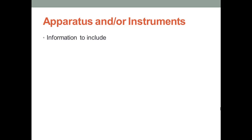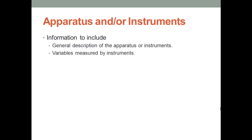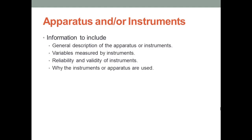In the apparatus or instruments section of the Method section, you describe any apparatus or instruments you propose to use in your research study. The following information should be included: first, a general description of the apparatus or instrument; second, the variables measured by the instruments; third, the reliability and validity, when available, of the instruments; fourth, a justification for why you chose these instruments; and fifth, a reference indicating where the instruments or apparatus can be obtained.